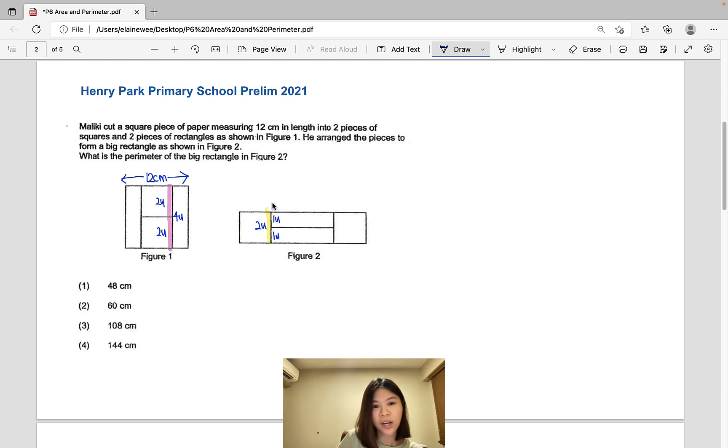So now we know that this part is 4 units. If we focus on this side of the square, we can see clearly that 1 unit plus 2 units plus 1 unit makes up 12 cm. So that means 4 units is equal to 12 cm. So 1 unit would be 12 divided by 4 and that gives us 3 cm.